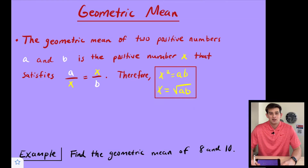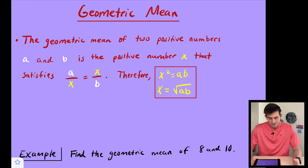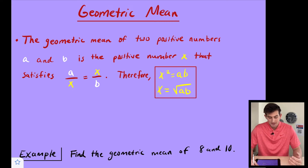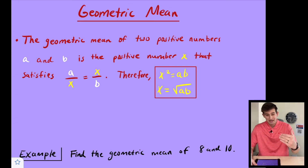Hello everyone, in this video we're going to talk about geometric mean. The geometric mean of two positive numbers A and B is the positive number X that satisfies the following proportion: A divided by X is equal to X divided by B.